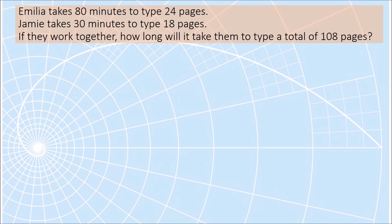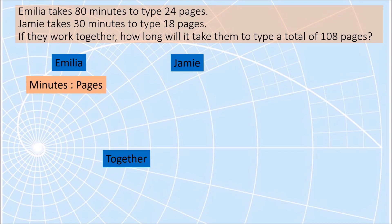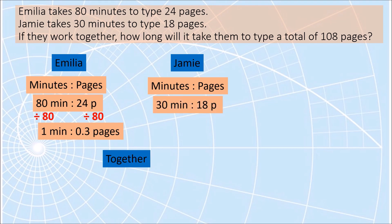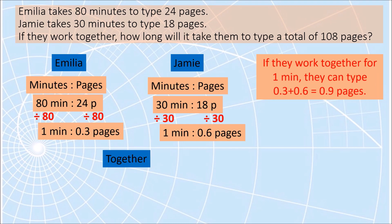What we will do is find how many pages each person can type in one minute, then add them to get how much they can type together per minute. For Emilio, the ratio is 80 minutes to 24 pages. Dividing by 80, in one minute Emilio can type 0.3 pages. For Jamie, the ratio is 30 is to 18. Dividing by 30, in one minute Jamie can type 0.6 pages. Together, 0.3 plus 0.6 gives 0.9 pages in one minute.